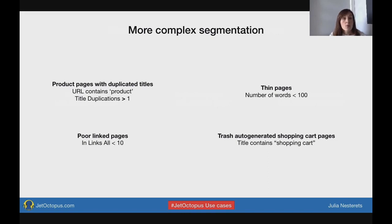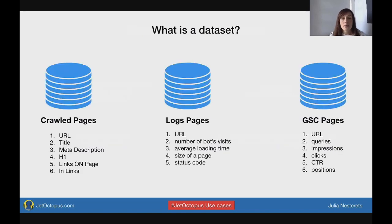If we speak about complex segmentation, we should go to data sets, because all of these complex segments are taken from different data sets — all of these attributes are taken from different data sets. We're talking about three major data sets: crawled pages, logs pages, and Google Search Console pages. All of these data sets are in JetOctopus.